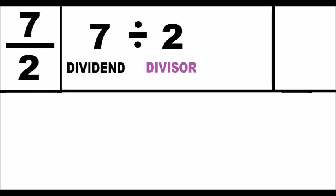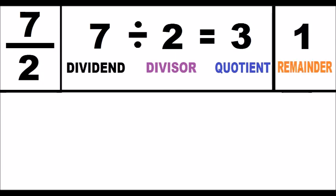Second step, the denominator 7 divided by the numerator 2. I get the quotient 3 and the remainder of the division is 1.